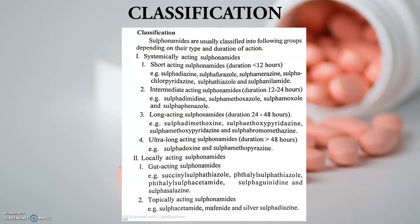The short acting drugs include sulfadiazine, sulfafurazole, sulfamerazine, sulfathiazole, and sulfanilamide. In the intermediate acting category we have sulfadimidine and sulfamethoxazole, which is very important in cotrimoxazole — the combination or potentiation with the diaminopyrimidine trimethoprim.